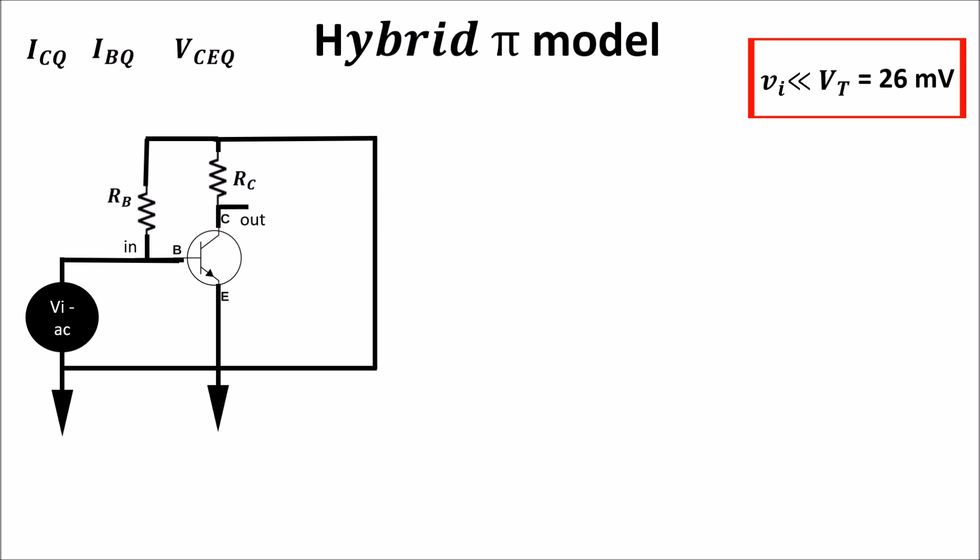So now we see the AC analysis because we want to find the output signal and the output gain under the small signal hypothesis. We need a small signal model for our BJT.